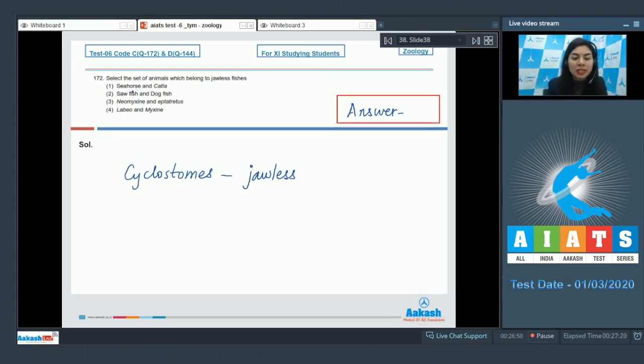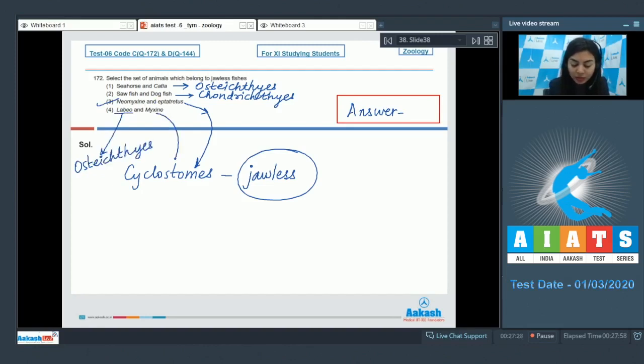Let's look at the options one by one. Option one: seahorse and cuttler, both are Osteichthyes. Option two: sawfish and dogfish, they belong to Chondrichthyes. Option three: Myxine and Petromyzon, these are examples of cyclostomes and hence are jawless fishes, so this is the correct set. Labeo is an Osteichthyes and Myxine is a cyclostome, but this is not the right set of only jawless fishes. So the correct answer is option number three.